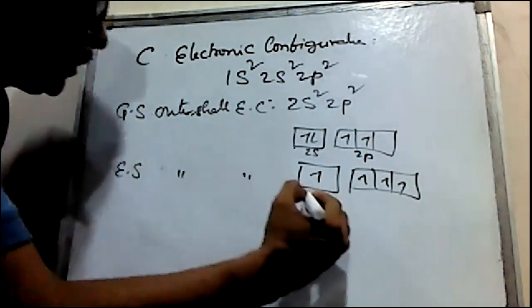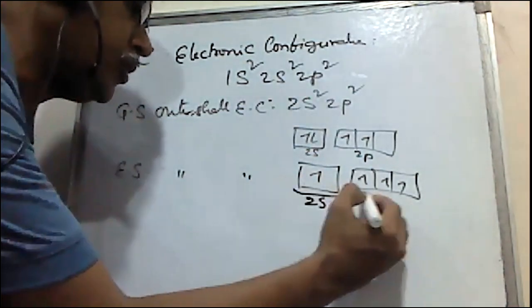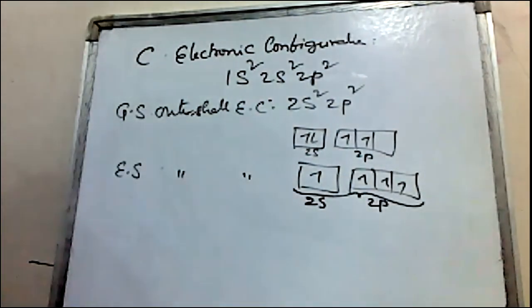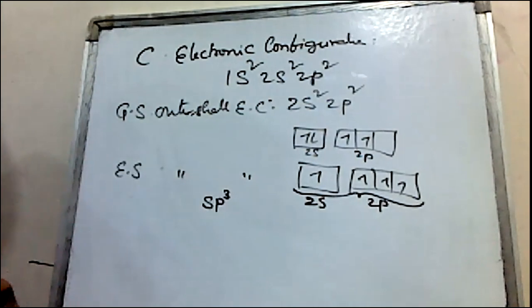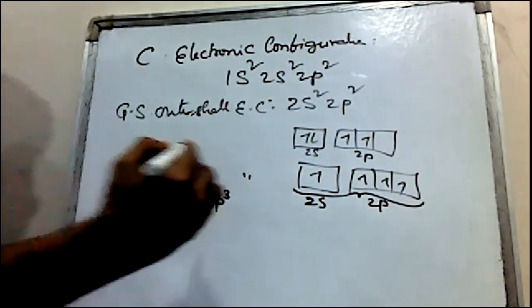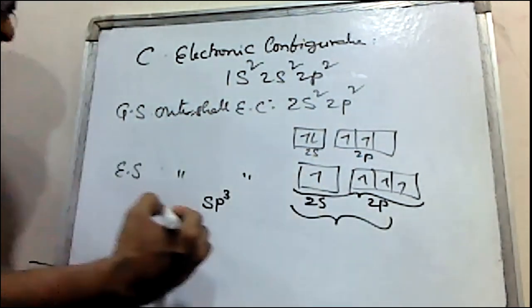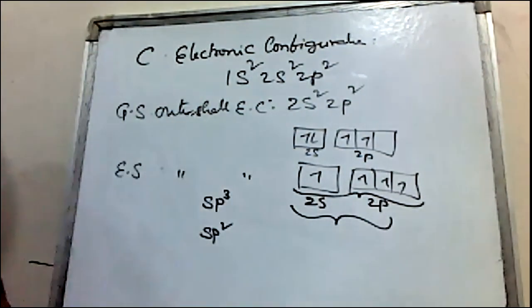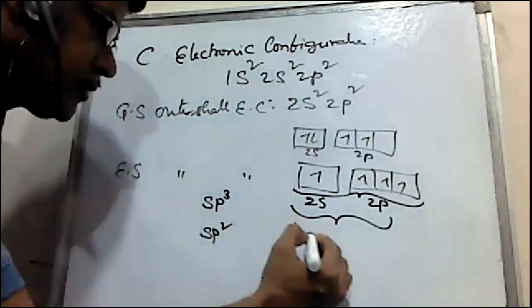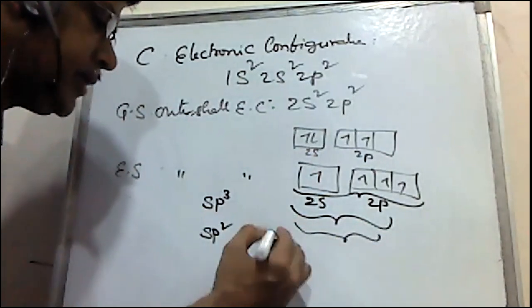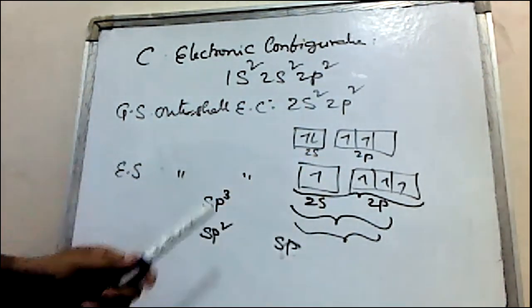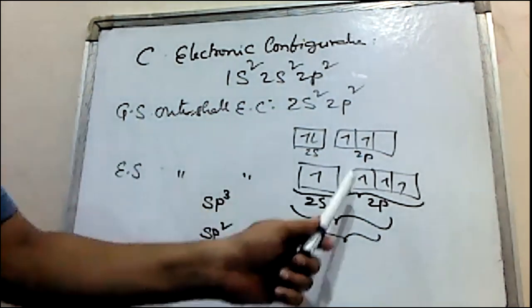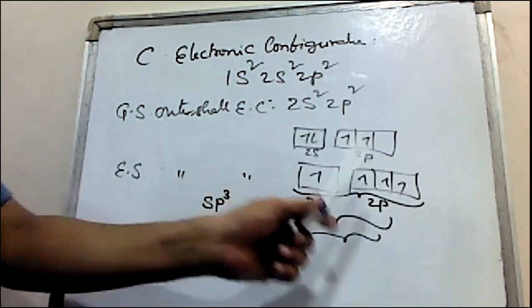This is the carbon with 1s atomic orbital and 3p atomic orbital hybridization being considered.